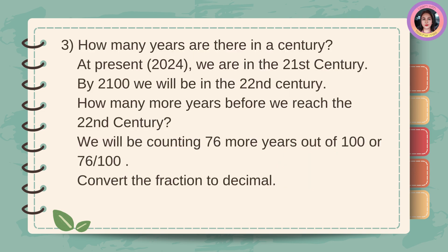Number three: how many years are there in a century? At present, 2024, we are in the 21st century. By 21 hundredths, we will be in the 22nd century. How many more years before we reach the 22nd century? We will be counting 76 more years out of 100 or 76 hundredths. Convert the fraction to decimal. Seventy-six hundredths is equal to 0.76 or 76 hundredths.